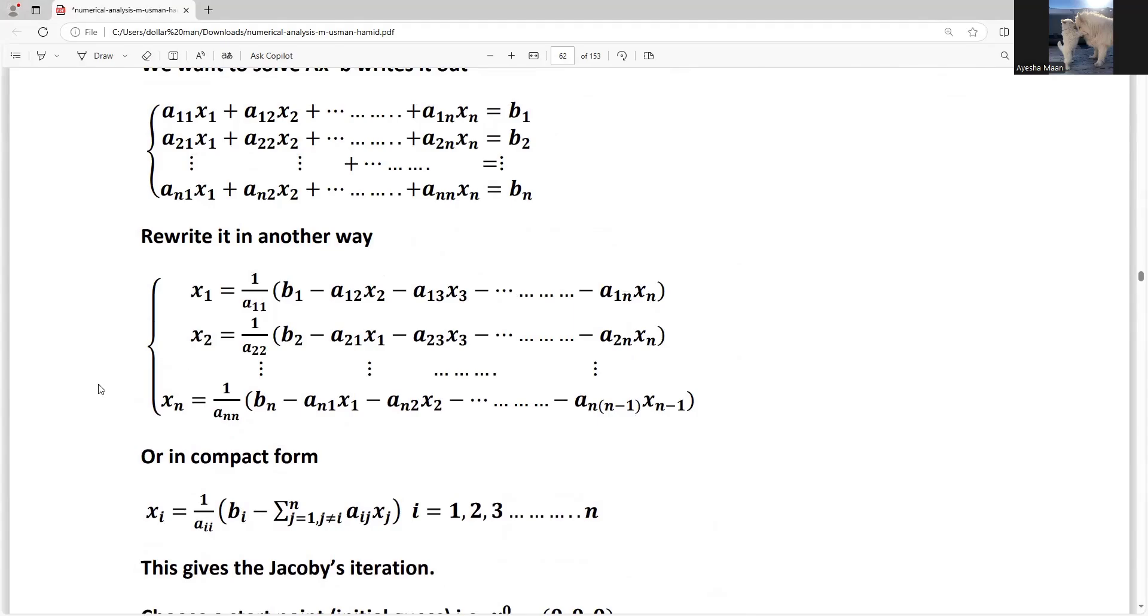Like in the previous lecture, we made these equations. In Jacobi Method, we have x1, x2, x3, x4, up to xn. After n, we have all values given in the starting.